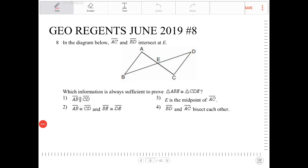In the diagram below, AC and BD intersect at E. Which information is always sufficient to prove triangle ABE is congruent to triangle CDE?